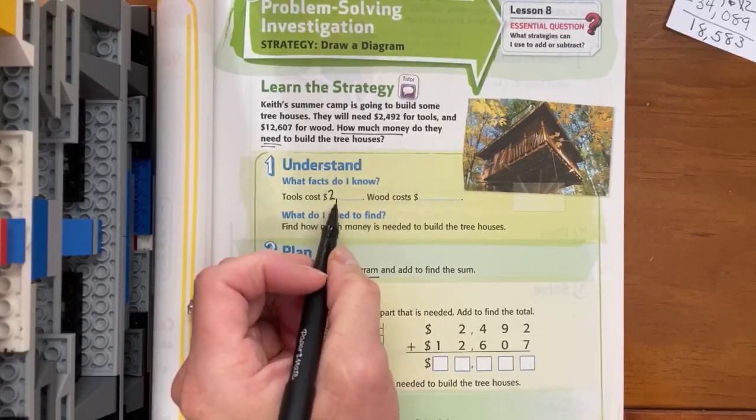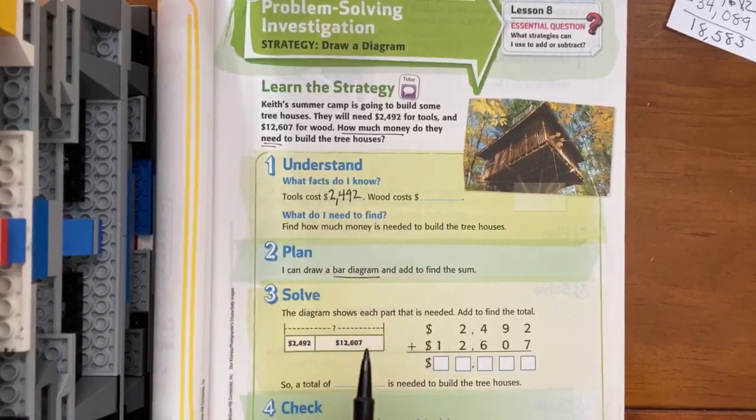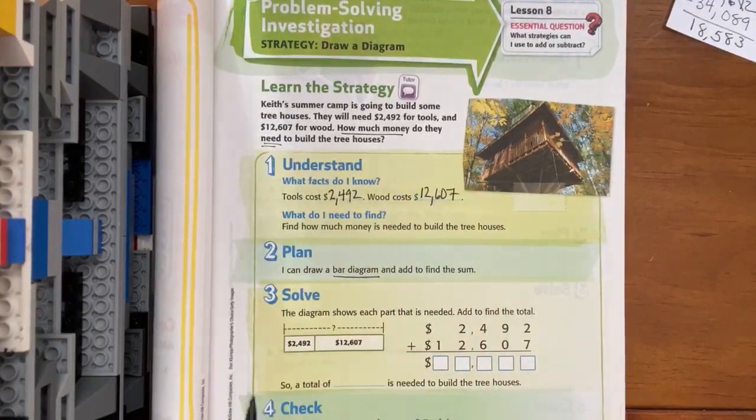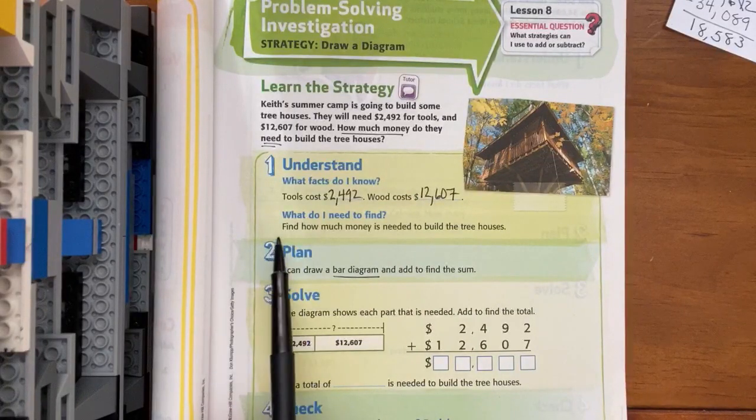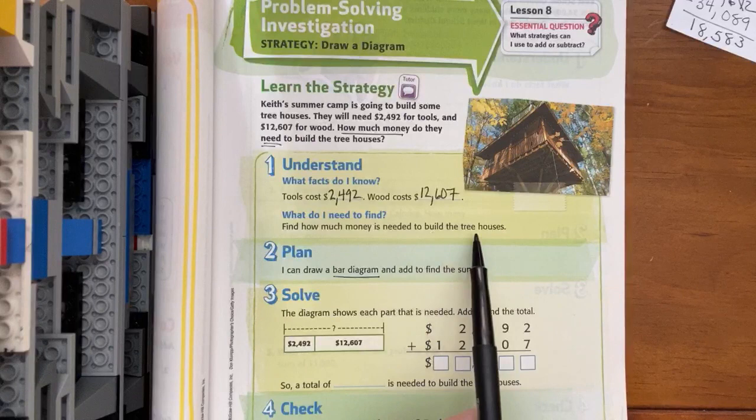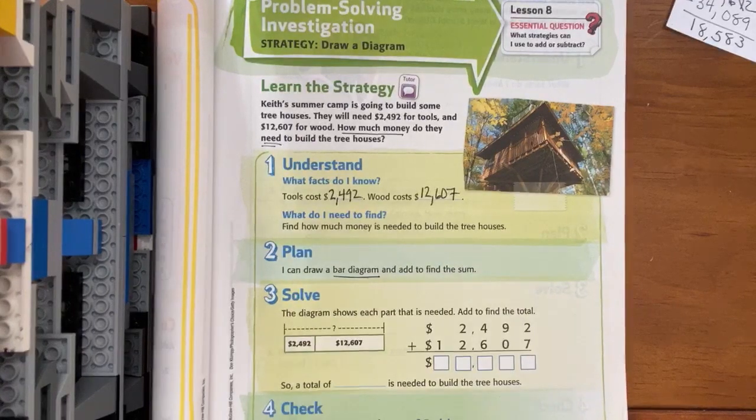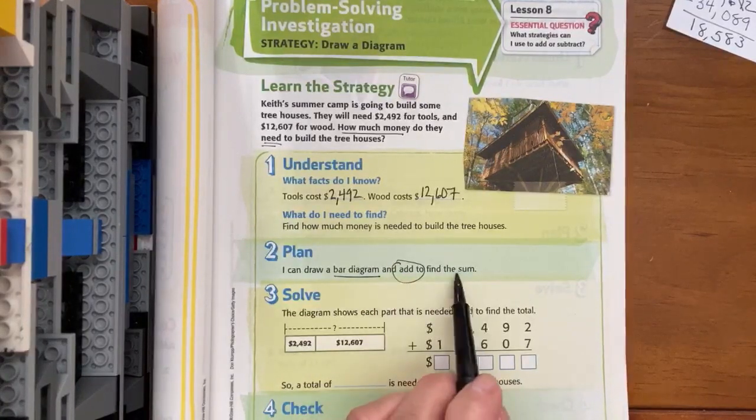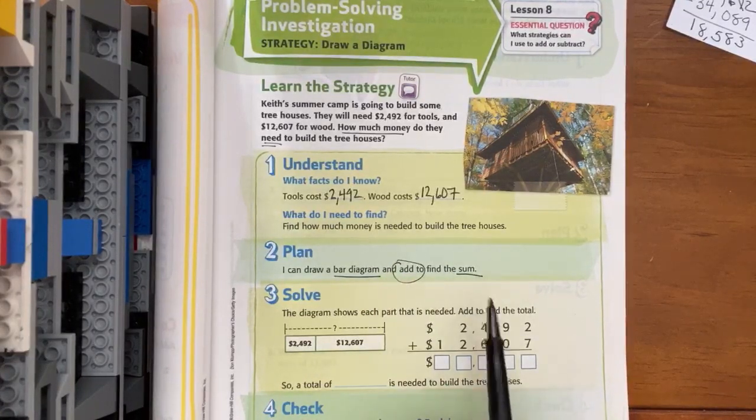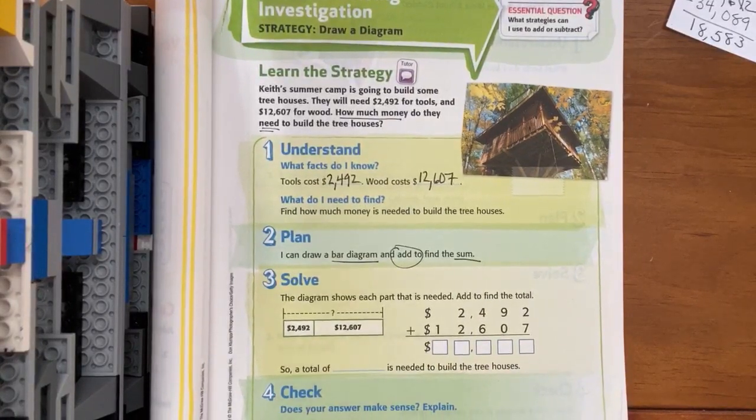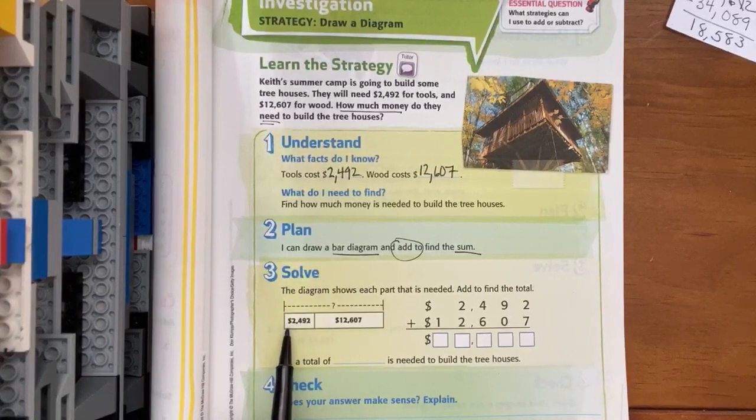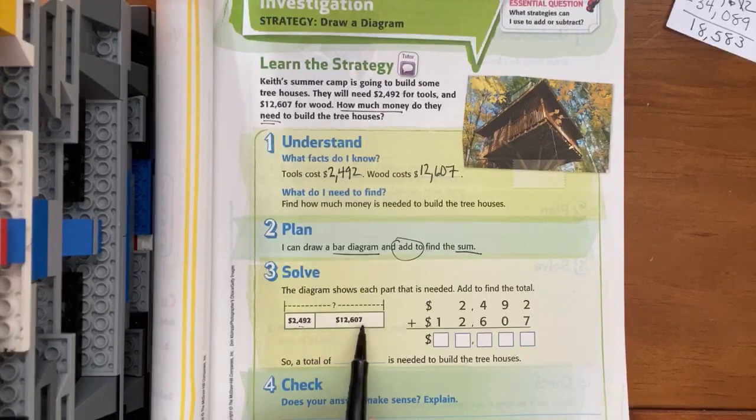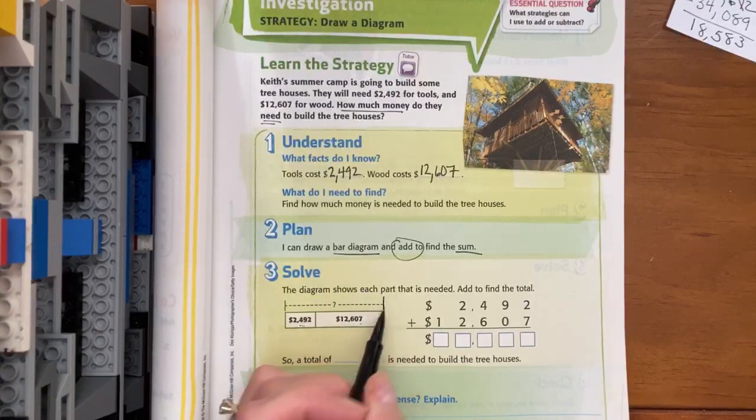We have to first understand what we know. We know that the tools are going to cost $2,492, and the wood is going to cost $12,607. What do we need to find? They filled it in for you. We need to find how much money is needed to build the tree houses. We're going to draw a bar diagram and add to find the sum. I love that they're using our academic vocabulary. This is a bar diagram. Here is where they wrote the money for the tools, here is where they wrote the money for the wood, and this shows the part that we don't know.